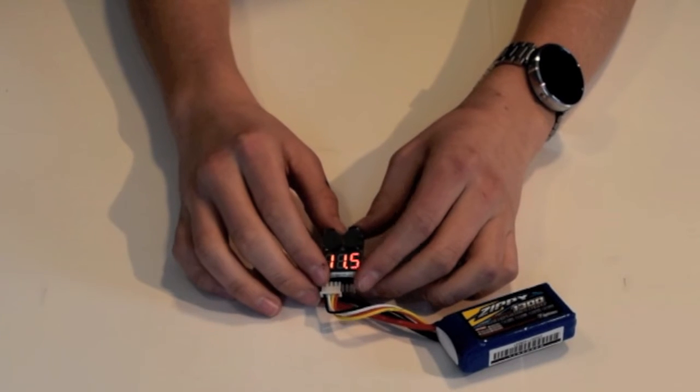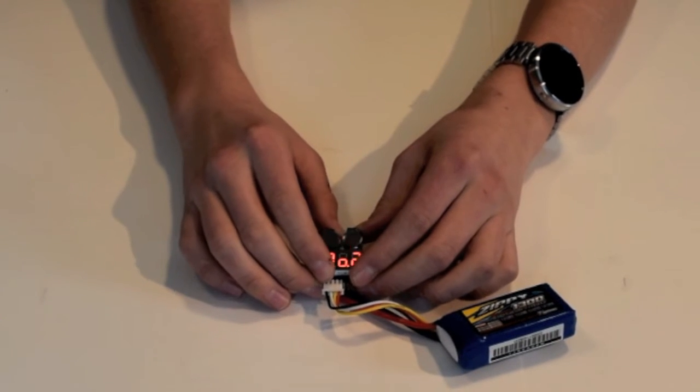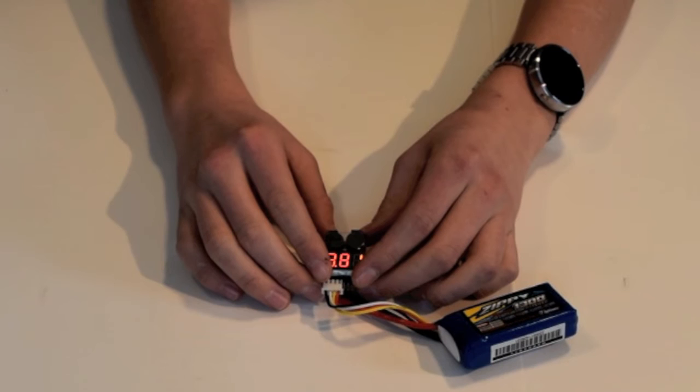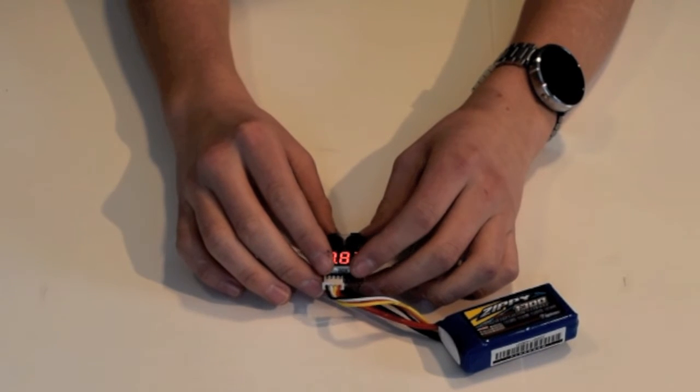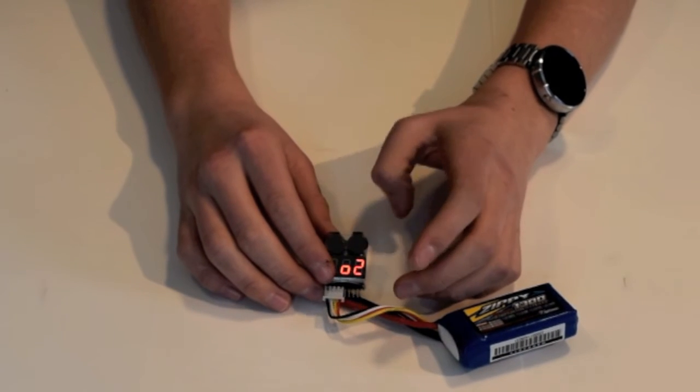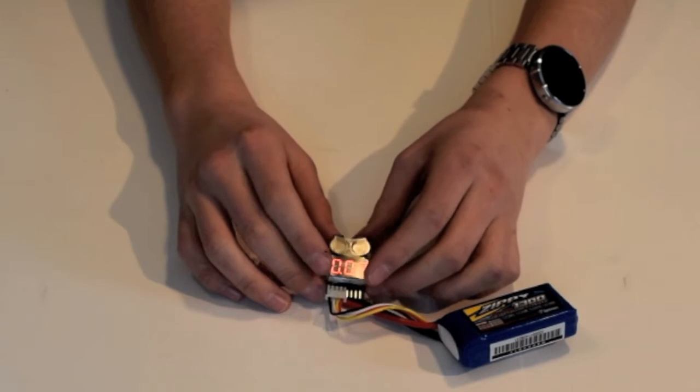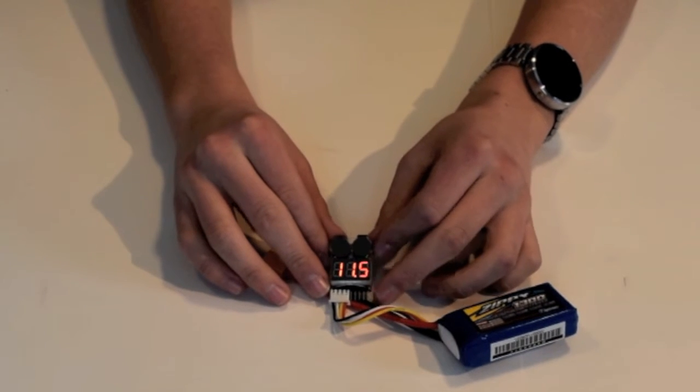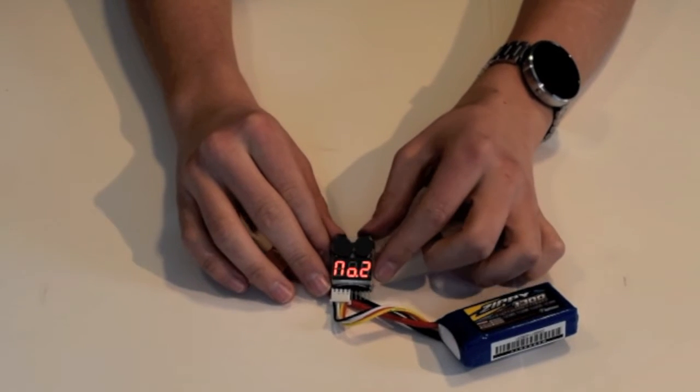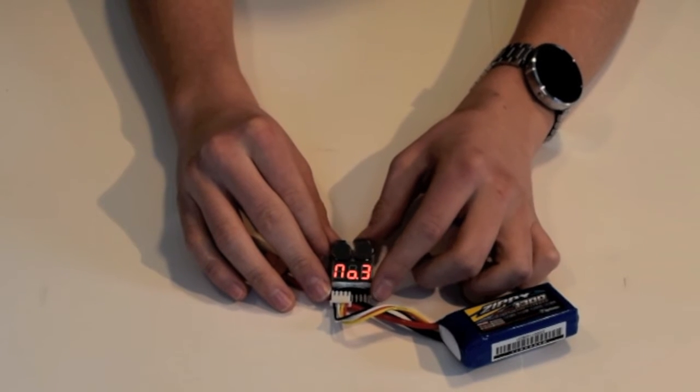So when you click on that, if you don't start pushing it again immediately, then it's going to go right back to giving you the information about your battery. So I just need to click on it, and as you can see it goes away really quickly.